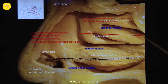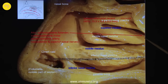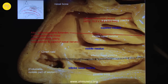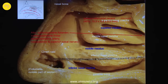The sphenopalatine foramen is of utmost importance as it gives access to the pterygopalatine fossa. Through this pterygopalatine fossa we find the origin of the sphenopalatine artery, which nourishes the majority of the vascular plexus in the mucosa. It is also the entrance and exit point from the skull for the sphenopalatine nasal nerves, the superior nasal nerves — they all emerge through the sphenopalatine foramen.